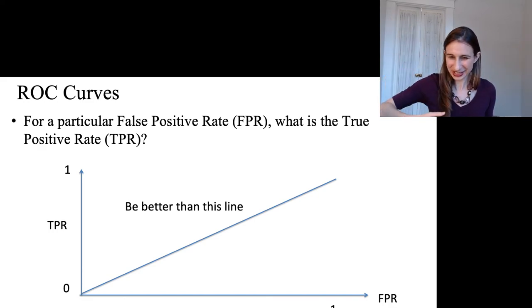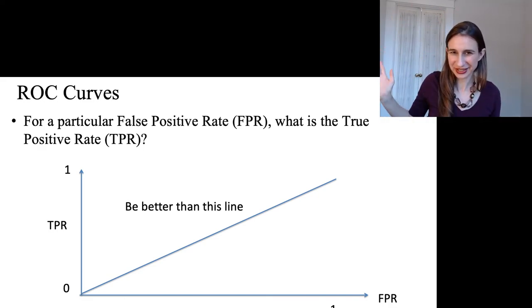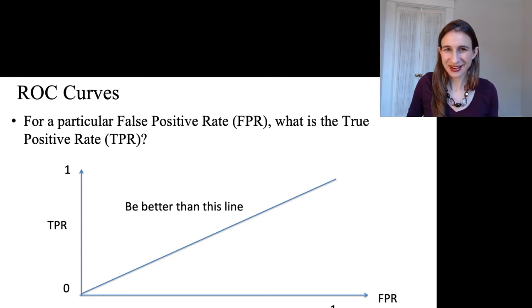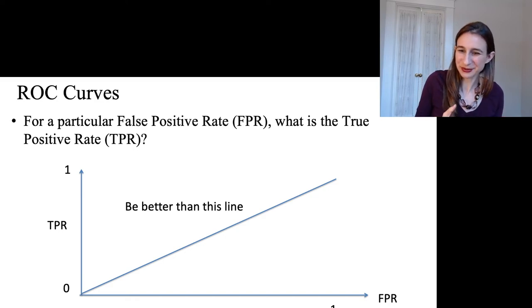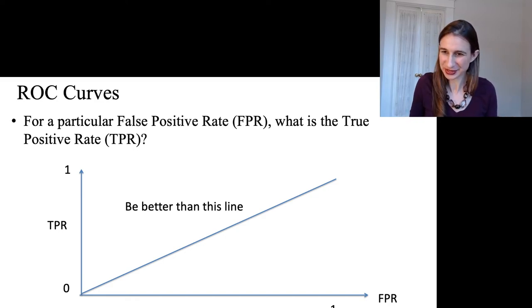throw them up in the air, put them back down, create a classifier. In that case, that's when the true positive rate would increase at the same rate as the false positive rate. You really want to be better than that line. The worst possible AUC you can get is 0.5.